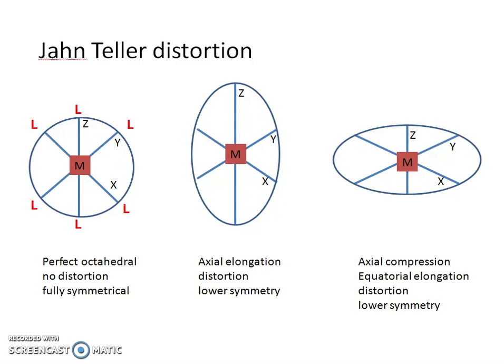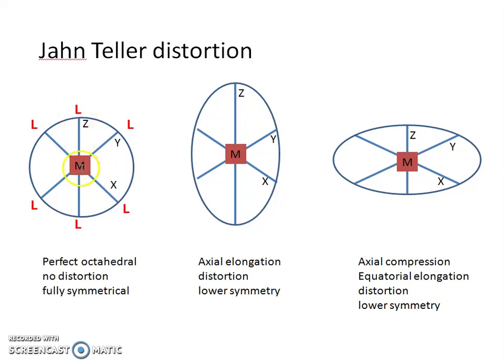Good day. Today we're going to talk about Jahn-Teller distortion. On your left hand side you can see a perfect octahedral. You've got your metal center with six ligands around it. The bond length between your metal and the donor atom of your ligand is equal in all directions. So this is a perfectly symmetrical octahedral without any distortion.